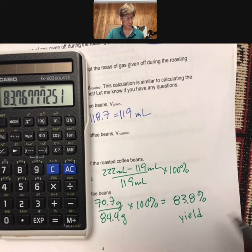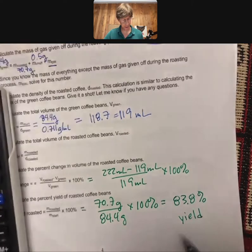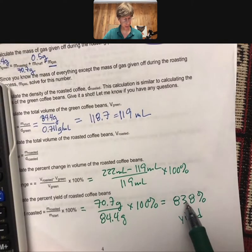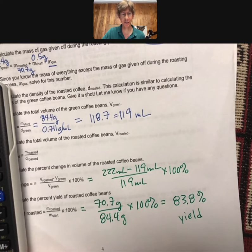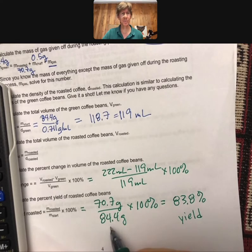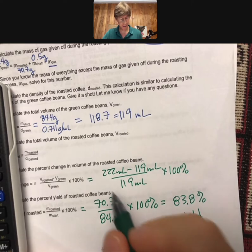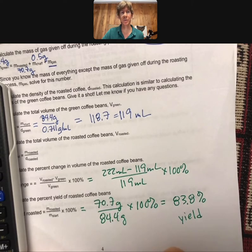And we'll use this number because if we know that our percent yield is 83.8, we can plug in a value, sort of reverse this calculation, plug in a value of green beans that we start with and know how many roasted coffee beans we get out.